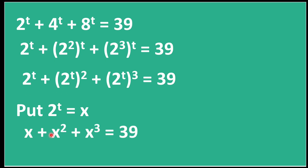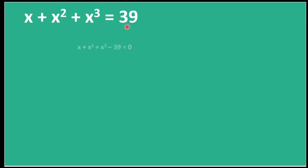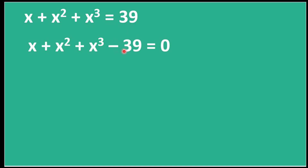So the equation becomes x + x² + x³ = 39. Now we will bring 39 to the other side so that the whole equation equals 0.